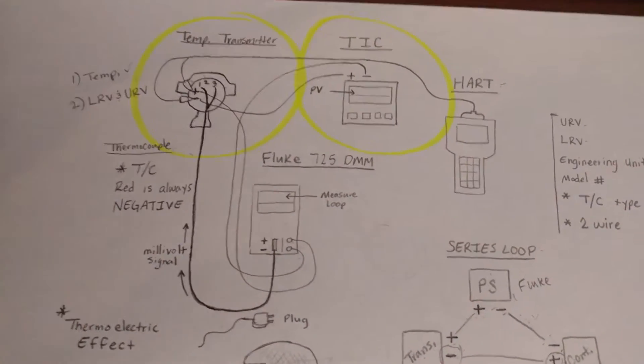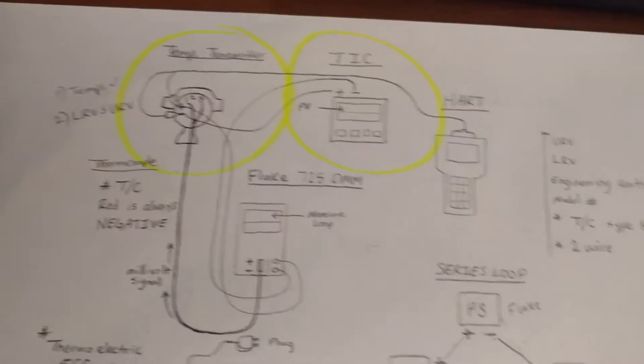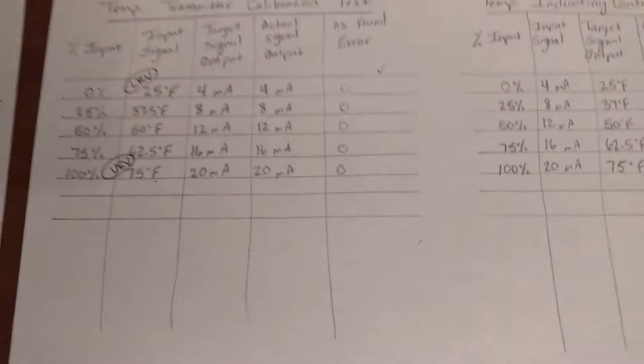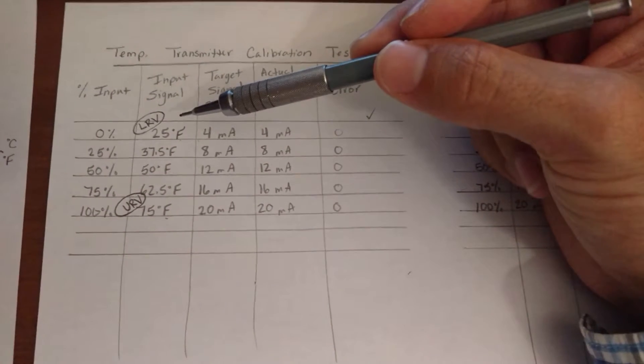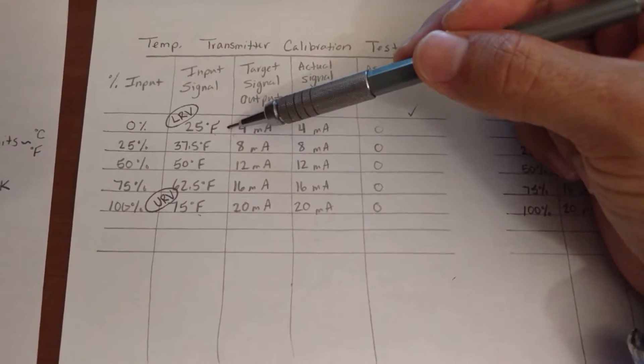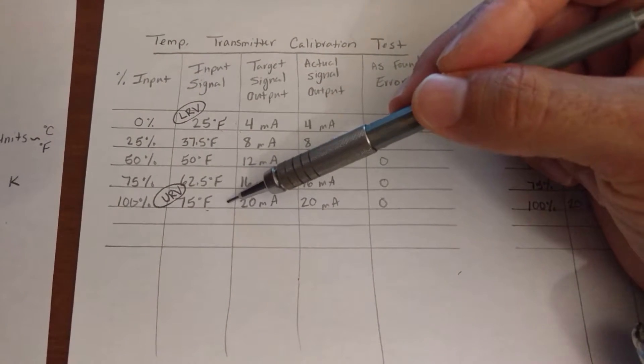So now we have the temperature values and the lower range value and upper range value. So let's go to our little chart here. The lower range value in this case we have established as 25 degrees Fahrenheit. That's inside the transmitter now. The upper range value is 75 degrees Fahrenheit.